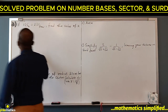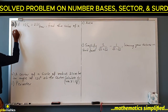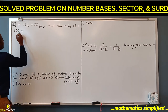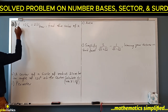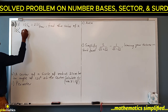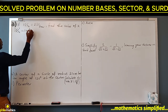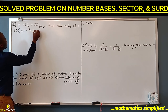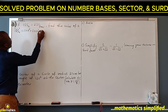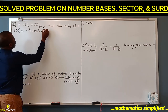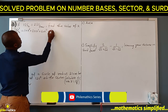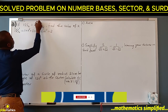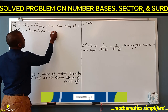135 in base k to base 10: the digits are at positions 0, 1, 2, so this is 1 times k squared plus 3 times k to the power 1 plus 5 times k to the power 0. For 231 base 4, the positions are also 0, 1, 2, so we multiply by powers of 4.